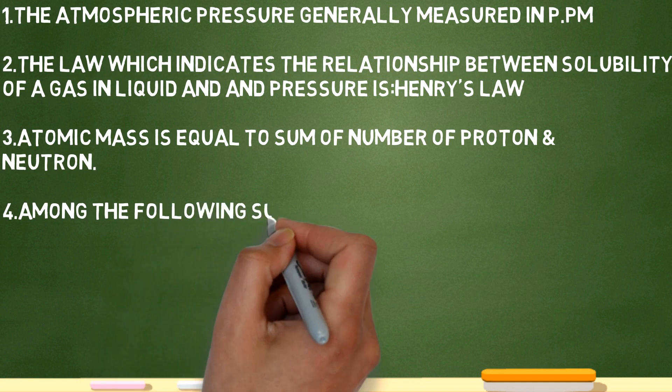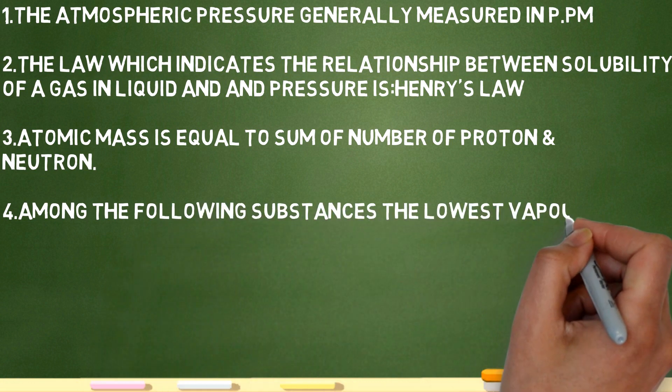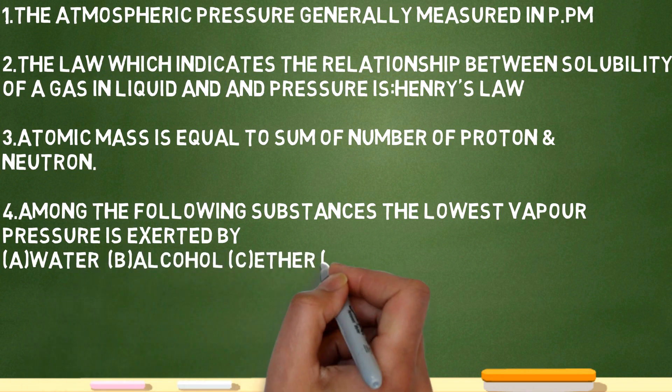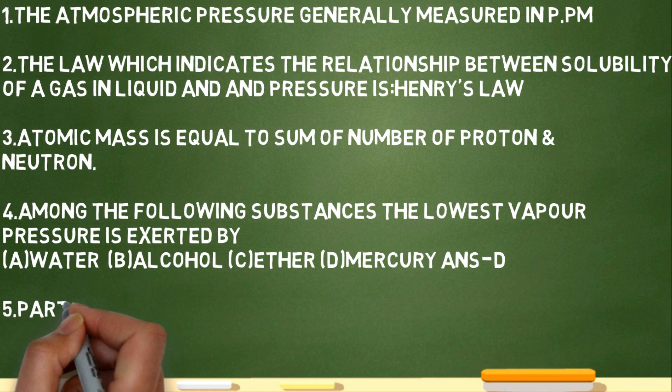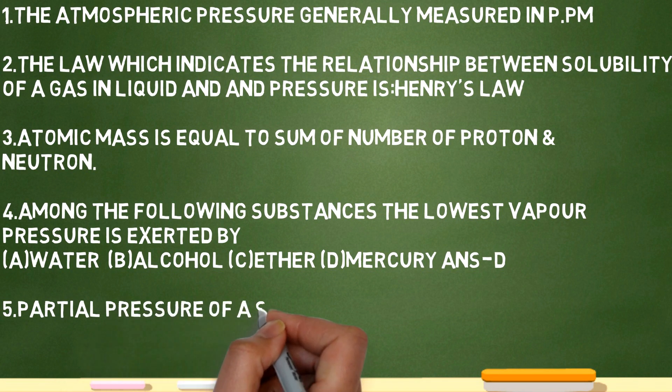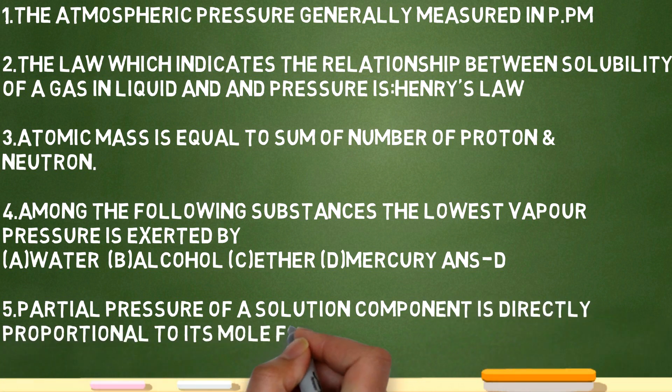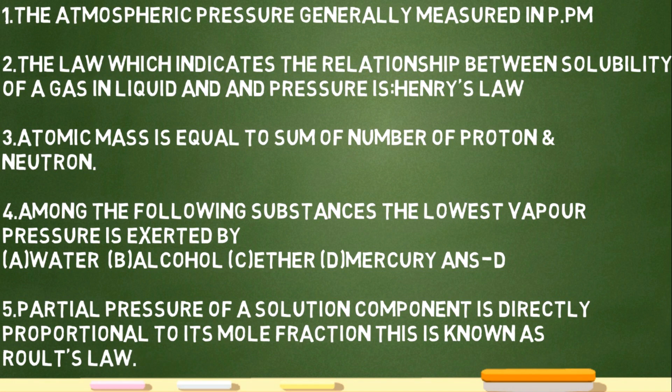Question four: among the following substances, the lowest vapor pressure is expected. The answer is mercury. Water, alcohol, ether - mercury has the lowest vapor pressure. Partial pressure of a solution component is directly proportional to its mole fraction.